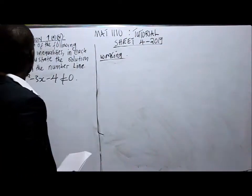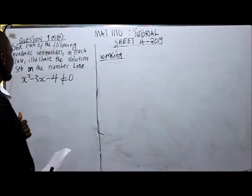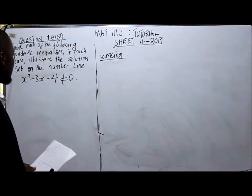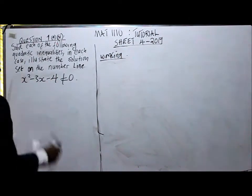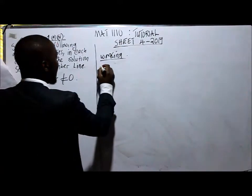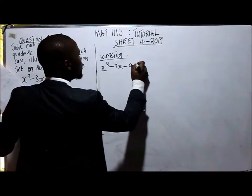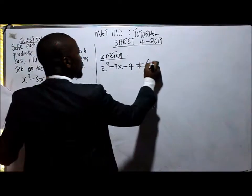Question 4 is saying: solve each of the following quadratic inequalities. In each case, illustrate the solution set on the number line. So this is the equation which we are having. The equation is x² - 3x - 4 ≠ 0.